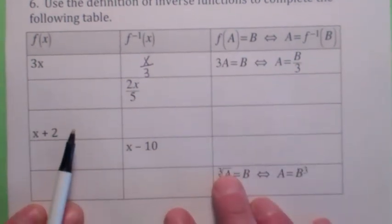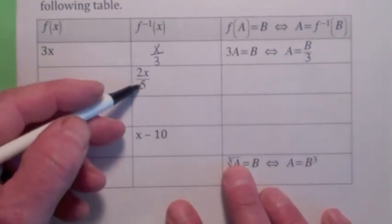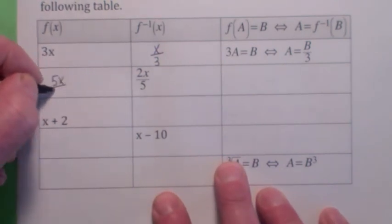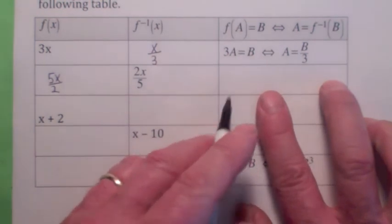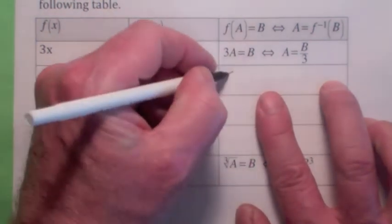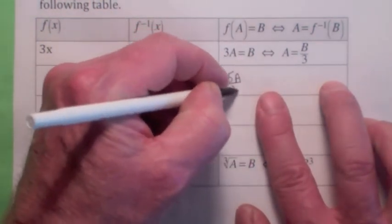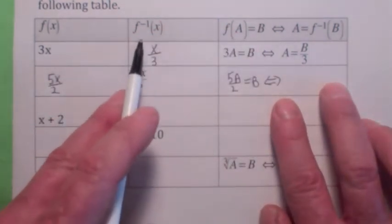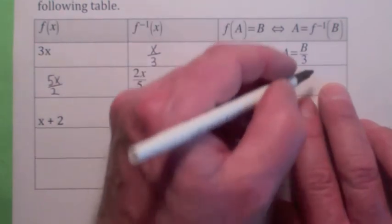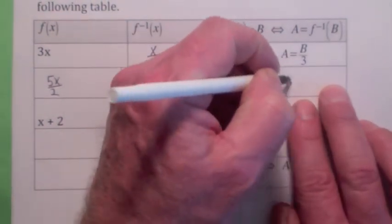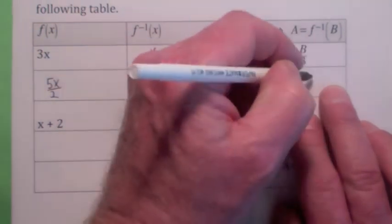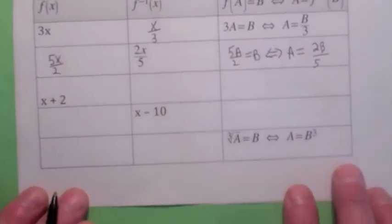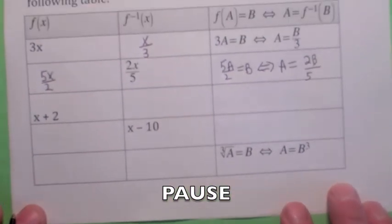If the inverse function is 2x/5, then the function has to be 5x/2. So f(a) = 5a/2 = b if and only if a = f inverse of b, which is 2b/5. Hit the pause button and finish filling out this table.